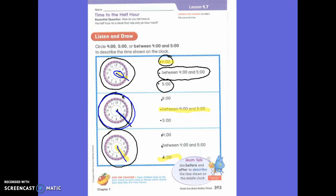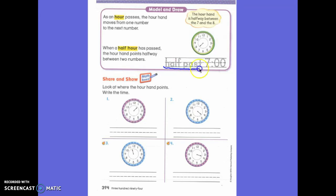Did you notice, first grade, that on this clock the line was halfway between the two numbers? Did you notice that? When the hour hand passes a number, then we say it's passed that time. If it has not gone past the number, then it is not past that time yet. And you'll see what I mean.